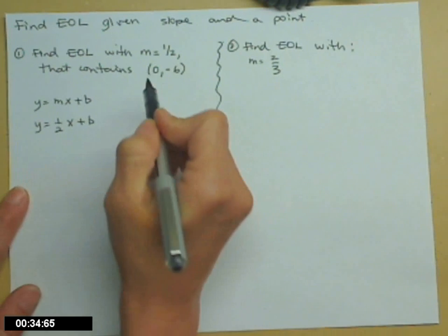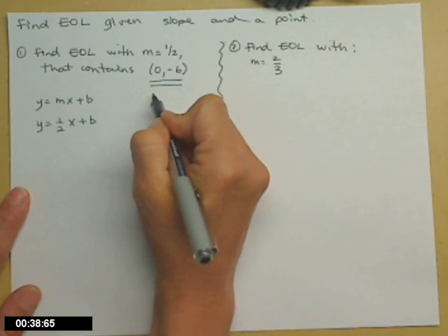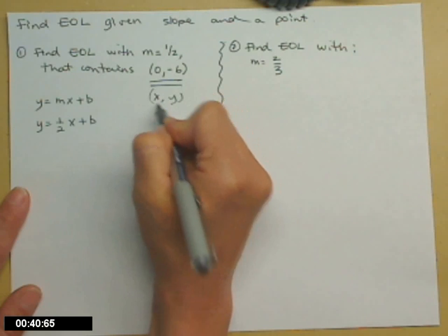Now at this point, you can either plug these numbers, the 0 and -6, in for x and y respectively.